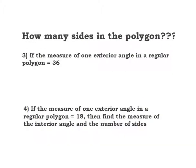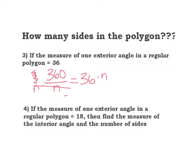If the measure of one exterior angle in a regular polygon is 36, how many sides are there? The sum of exterior angles is always 360. Dividing by n gives one angle: 360 divided by n equals 36. Multiplying both sides by n: 360 equals 36n. Dividing by 36: n equals 10. I have a decagon — in a decagon, one exterior angle is 36 degrees.